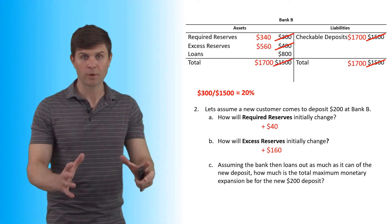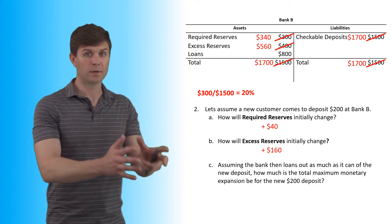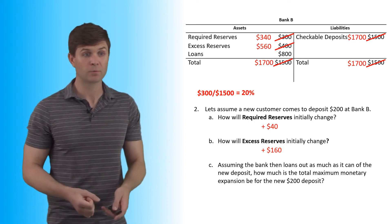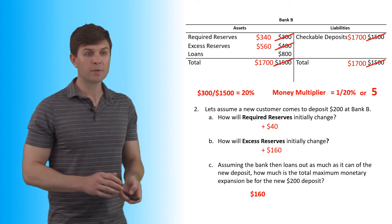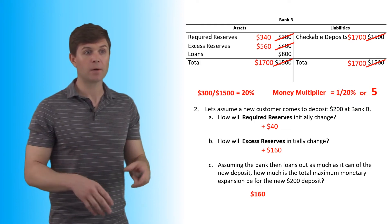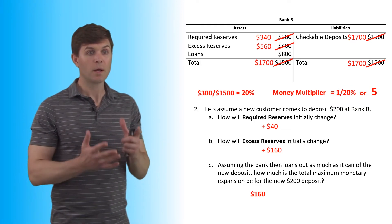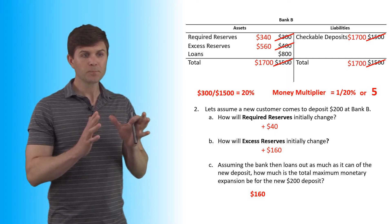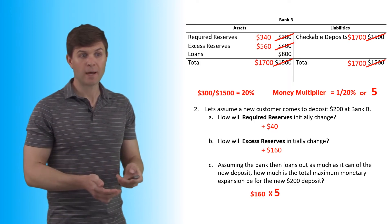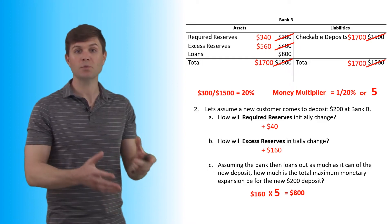So we're only worried about that $200. Now of that $200, $160 can be loaned back out in excess reserves. So that's going to get multiplied by our money multiplier, or in this case, one over 20%, $160 times five ends up turning into $800.